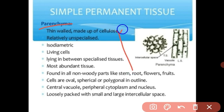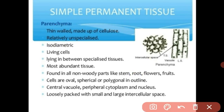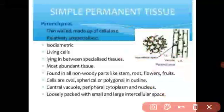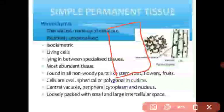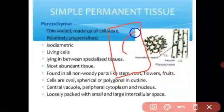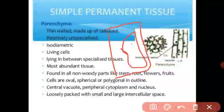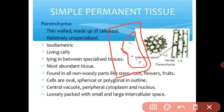The shape of the parenchyma is oval, spherical, and polygonal. Looking at the structure: this is the cell. It has large vacuoles. Vacuoles means space — large vacuoles that contain the cell sap.